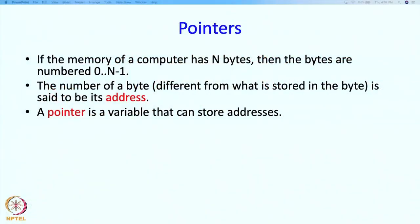In the byte you can store some other value, and that is different from the address or the number that has been given, which is the position of the byte along that street. The term pointer is used to denote a variable that can store an address. An address is also a number, but we are going to make a distinction because addresses are going to be used for very different purposes than ordinary numbers.